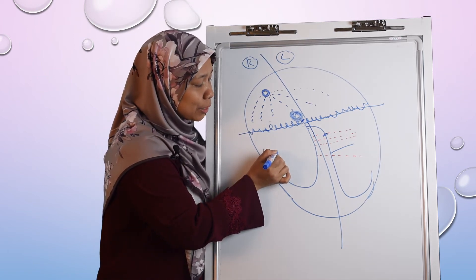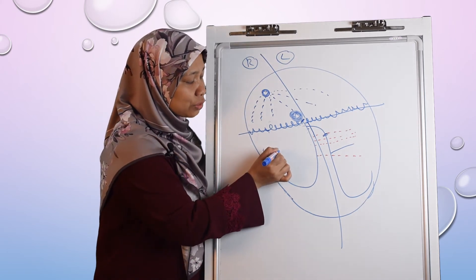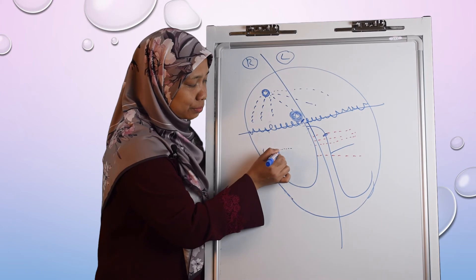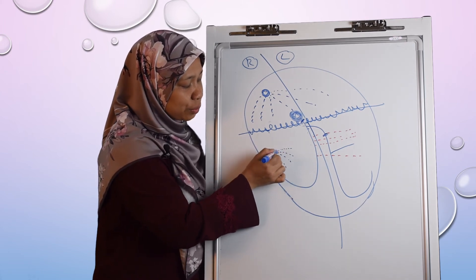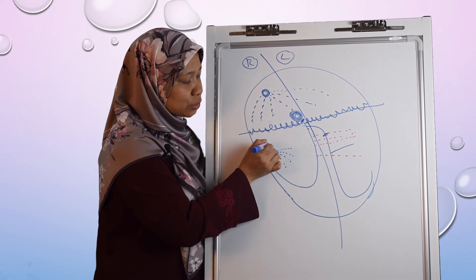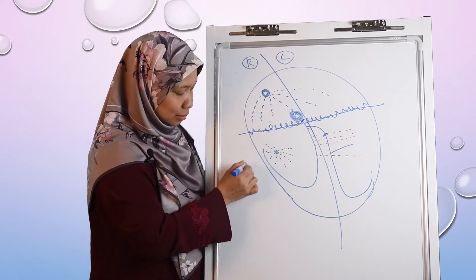So when there is an impulse generated from the ventricular cells, this impulse will travel through the myocardium. When it travels through the myocardium, the time taken will be longer. So that's why the QRS complex will be broad. So that's why we can see something like this.